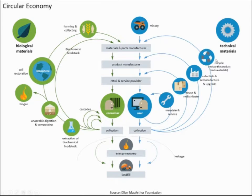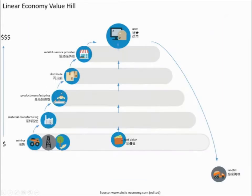The strategy includes maintaining things, reusing things, refurbishing, and recycling. The smaller circles are better — easier to manage, more effective at keeping value. If you maintain a product it stays a product, but breaking it down, recycling it, and making it back into a product is a bigger loop with more effort and more cost. That's how a circular economy works in a nutshell.